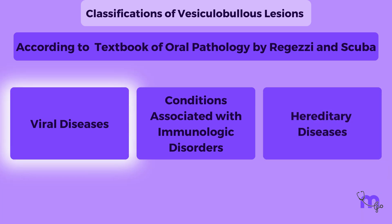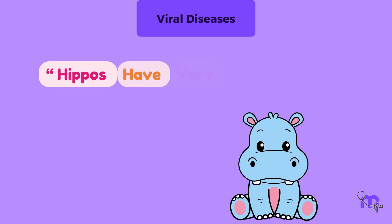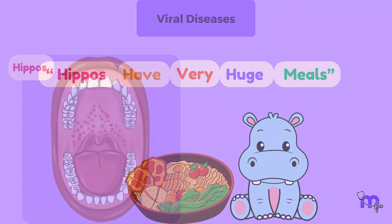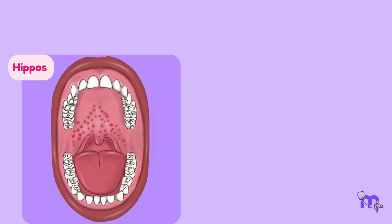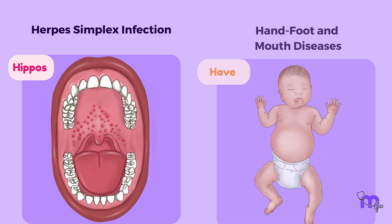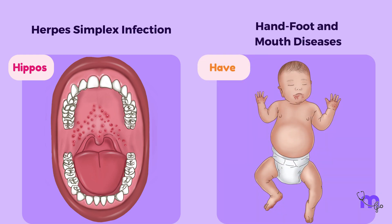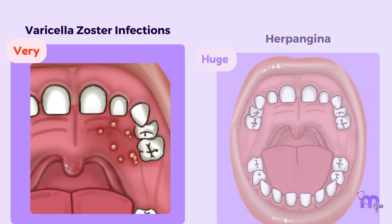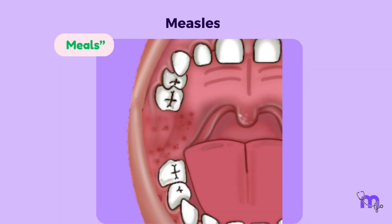Let's check out a mnemonic to remember the first category of viral diseases: "Hippos have very huge meals." The viral lesions include herpes simplex infection, hand, foot, and mouth disease, varicella zoster infections, herpangina, and measles.